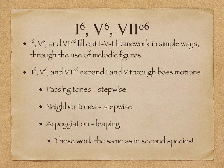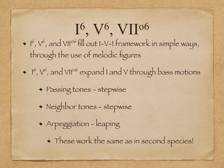Importantly, I⁶, V⁶, and VII°⁶ fill out the framework of I-V-I through the use of melodic figures that you already know. I⁶, V⁶, and VII°⁶ expand I and V through bass motions of passing tones, which are stepwise, neighbor tones, which are also stepwise, and arpeggiation, which involves leaping to and from a tone. We are focusing on the bass line here and the movement from chord to chord when analyzing these chords and their functions. These figures will appear and work in the same way that you have already encountered them in second species counterpoint.